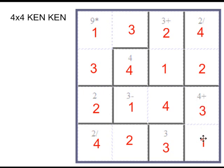3 plus 1 is 4. 4 divided by 2 is 2. 2 plus 1 is 3. 4 minus 1 is 3. 4 divided by 2 is 2. And 3 times 3 times 1 is 9.